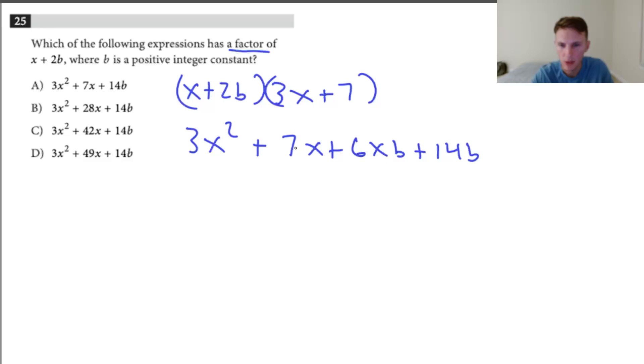And then what we can do here in the middle is we can factor out an x because they both have an x in common. So then this is 3x squared plus x times 7 plus 6b plus 14b. So now we're almost done. You have to pretty much just put it into this form. You have to see which one lines up with this. And we're told that b is a positive integer.